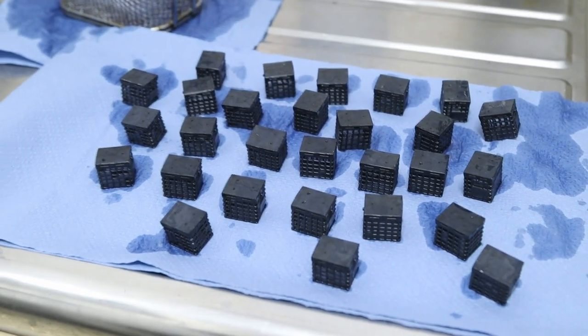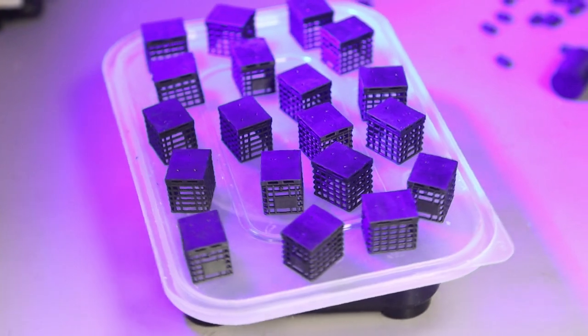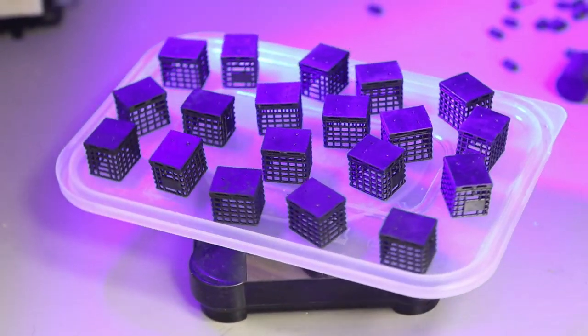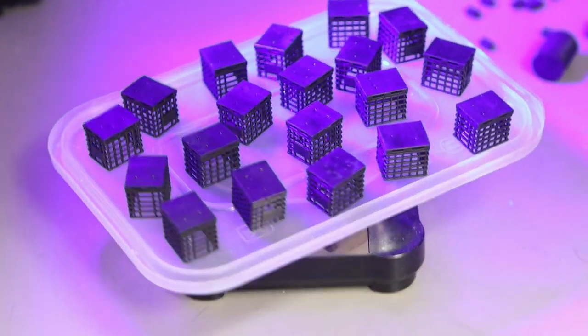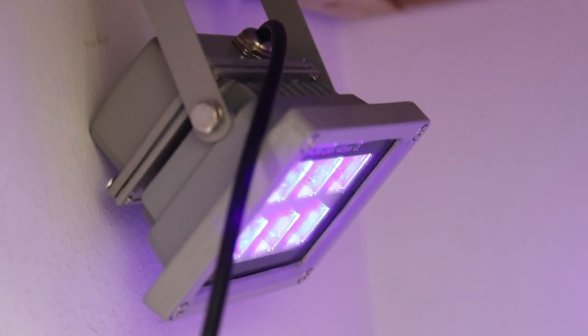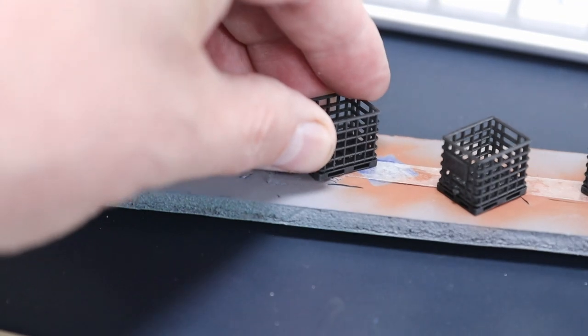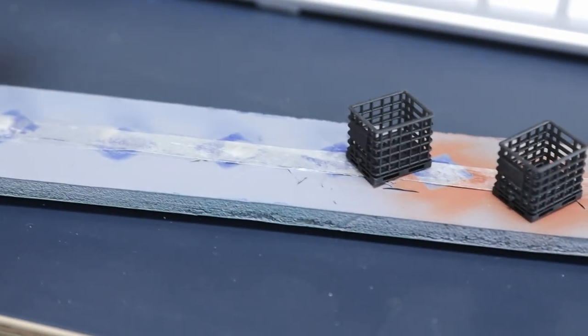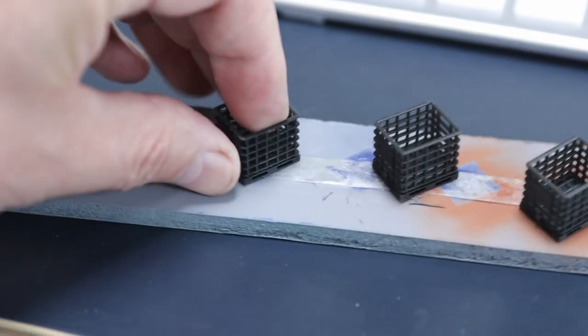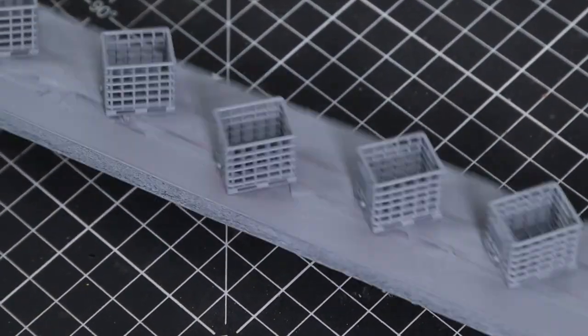Once they're fully dried, they are then cured. This is a UV lamp, about 20 pounds from Amazon, and one of these turntables. Once they're done, we'll pop them on a bit of sticky back tape and they're ready for paint.